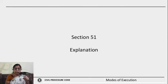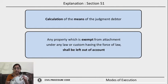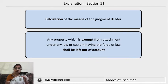There is an explanation to section 51 which addresses how the means of the judgment debtor are to be calculated. When calculating the means of the judgment debtor, any property which is exempt from attachment under any law in force, or any custom having the force of law, shall be left out of account from the total assets at his disposal. The exempted property cannot be attached, nor can action be taken against it when recovering the decreed amount.